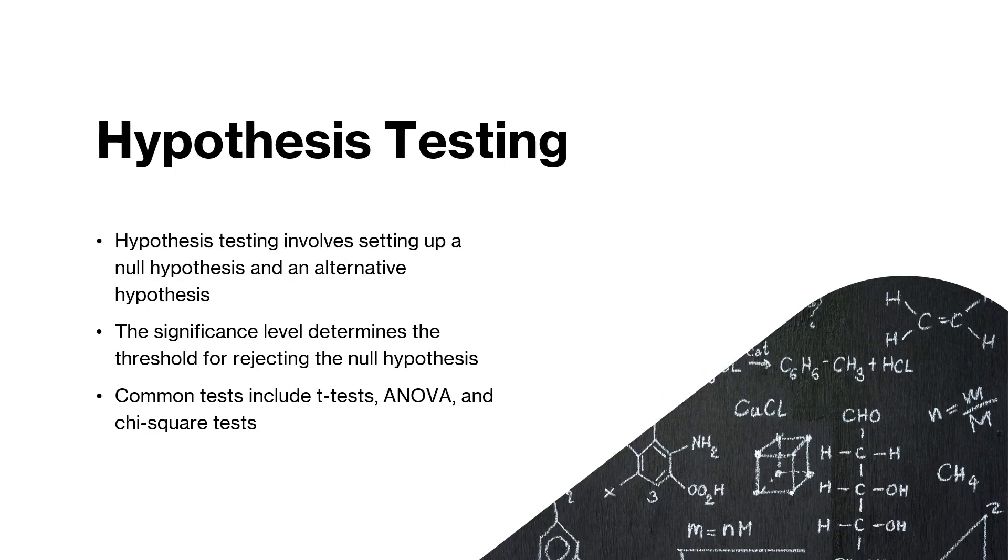Hypothesis testing involves setting up a null hypothesis and an alternative hypothesis. The significance level determines the threshold for rejecting the null hypothesis. Common tests include t-tests, ANOVA, and chi-squared tests.